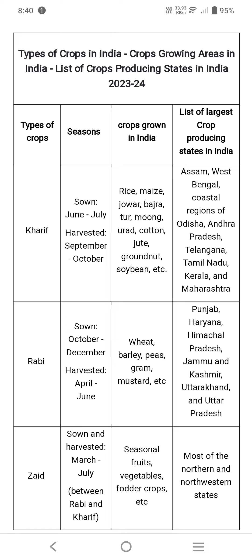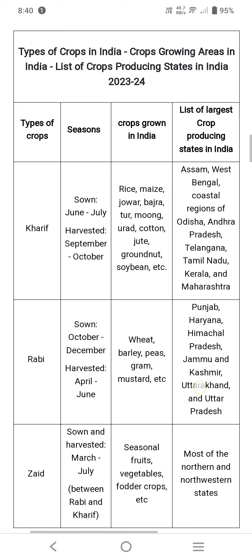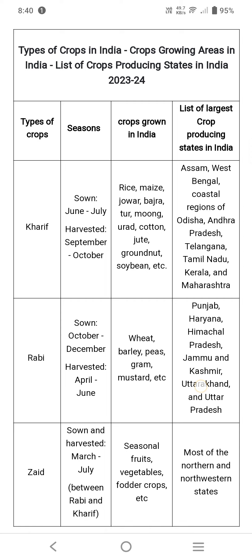Most of the north and northwestern states produce crops under the Zaid season. These are the types of crops in India, crops growing areas, and the list of crop producing states in India during 2023-24. Please like, share, and subscribe to Agriculture Tutorials.